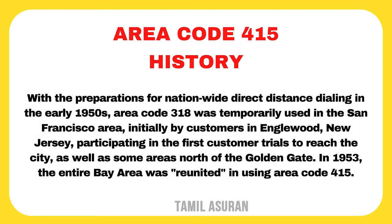With the preparations for nationwide direct distance dialing in the early 1950s, area code 318 was temporarily used in the San Francisco area — initially by customers in Englewood, New Jersey participating in the first customer trials to reach the city — as well as some areas north of the Golden Gate. In 1953, the entire Bay Area was reunited using area code 415.